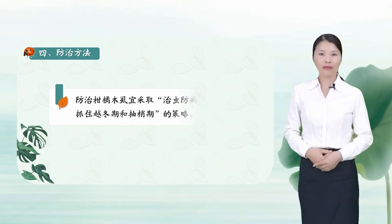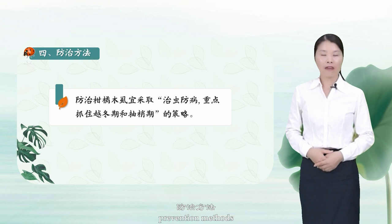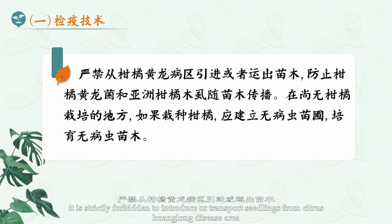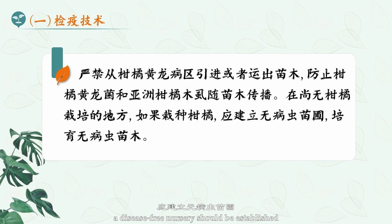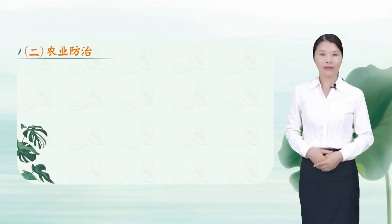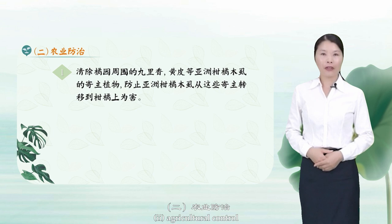Now let's learn the fourth part: prevention methods. One: Quarantine technology. It is strictly forbidden to introduce or transport seedlings from citrus Huanglongbing disease areas, to prevent citrus Huanglongbing bacteria and citrus psyllid from spreading with seedlings. If citrus is to be planted, a disease-free nursery should be established to cultivate disease-free seedlings.